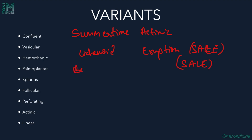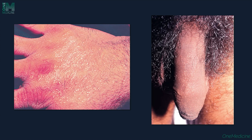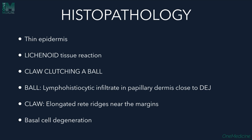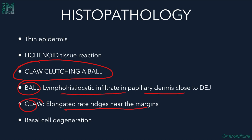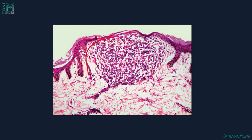Histopathology of lichen nitidus shows thin epidermis and lichenoid tissue reaction. The characteristic feature is a 'claw clutching a ball' appearance: the ball represents the lymphohistiocytic infiltrate in the papillary dermis, and the claw is the elongated rete ridges near the margins. Basal cell degeneration is also present.